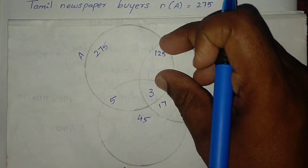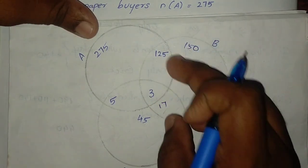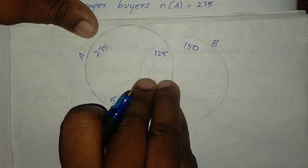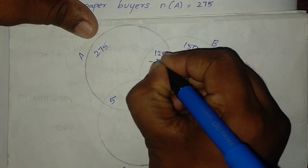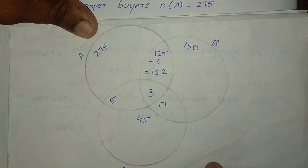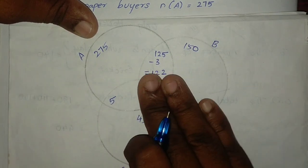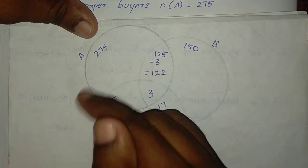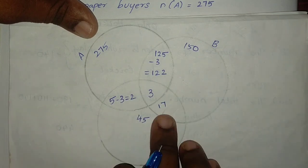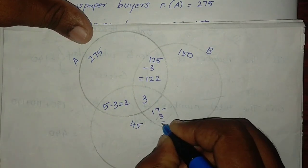Taking the intersection regions: A intersection B gives 125 minus 3 equals 122. A intersection C gives 5 minus 3 equals 2. B intersection C gives 17 minus 3 equals 14.